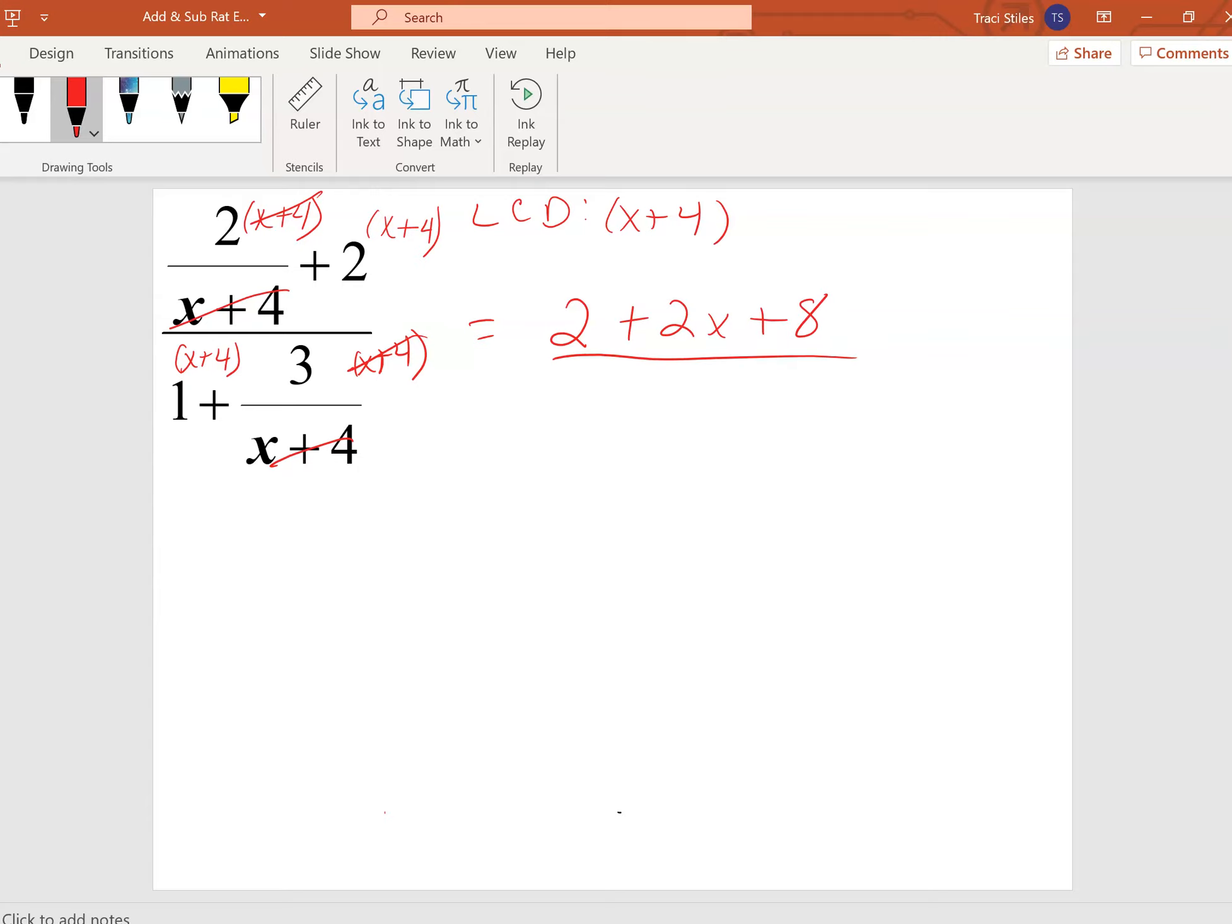And then that's going to be over 1 times x plus 4, which is just x plus 4, and then we're left with plus 3. Then you just combine your like terms, so we're going to have 2x plus 10 over x plus 7, and that would be your final answer.